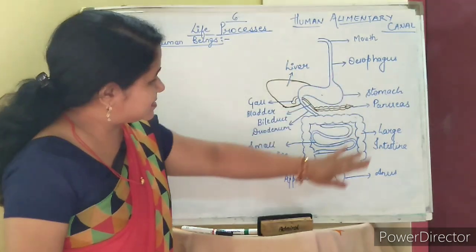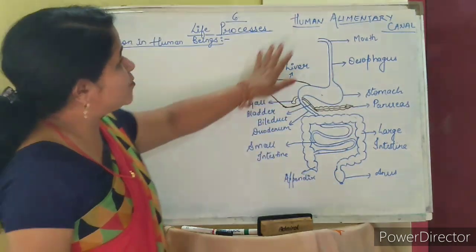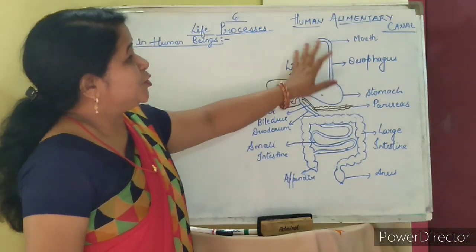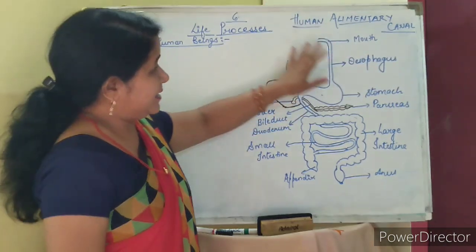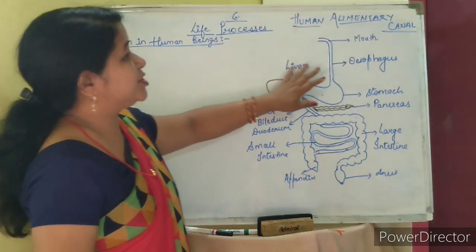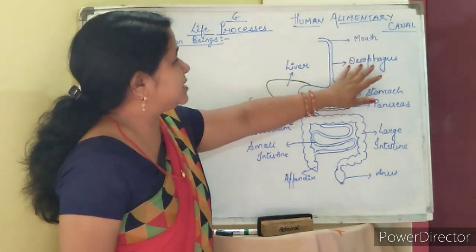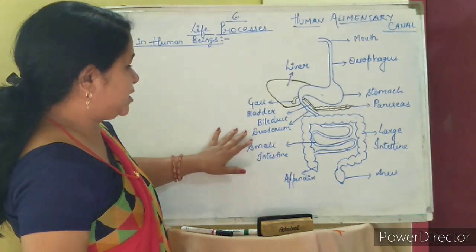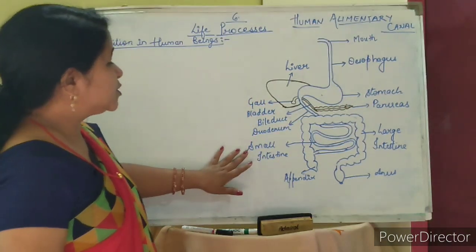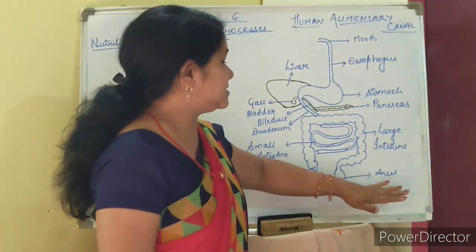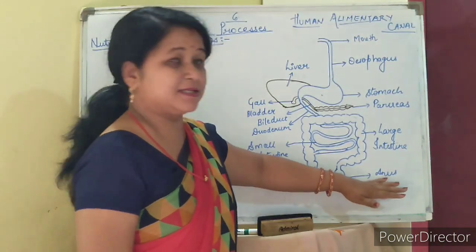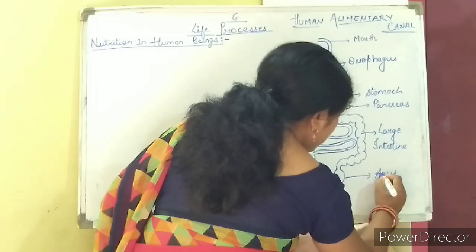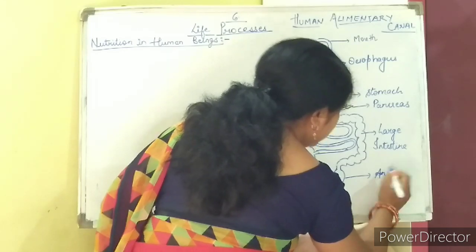Let's see here — this is a diagram of human alimentary canal. The parts of the human alimentary canal are: mouth, esophagus, stomach, pancreas, liver, gallbladder, bile duct, duodenum, small intestine, appendix, large intestine, and anus. We will study all these parts in detail.